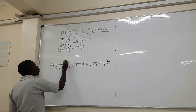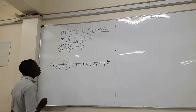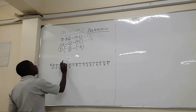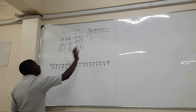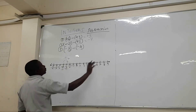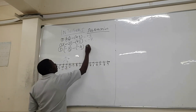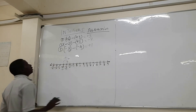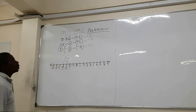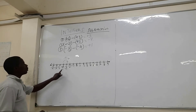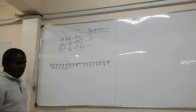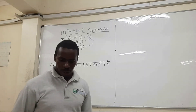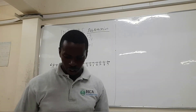We move from minus four to minus three — one step. We have moved to the right-hand side, so that is positive. One step, that is positive one. So minus three minus minus four gives us positive one. Let's look at our last example to demonstrate the same.